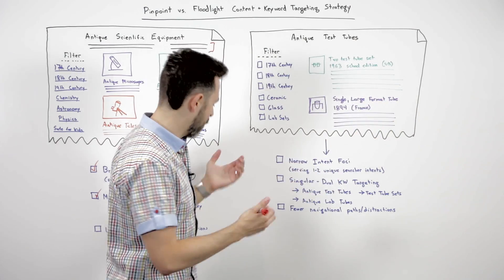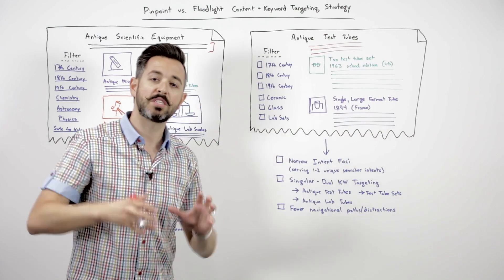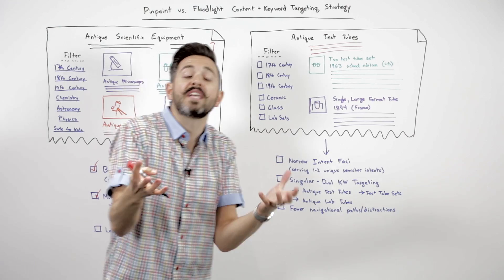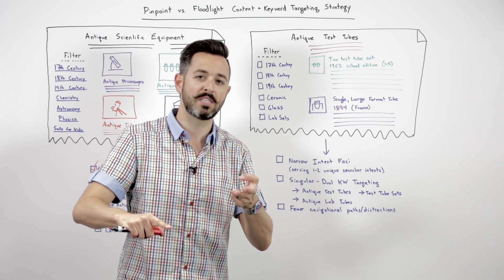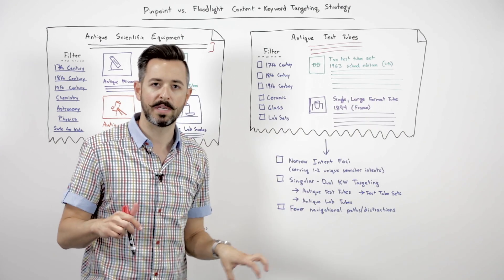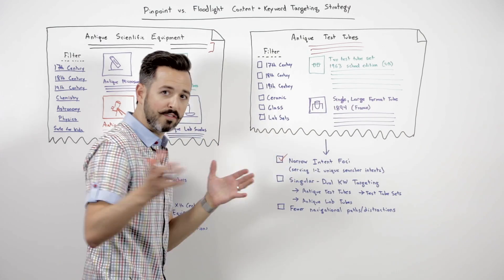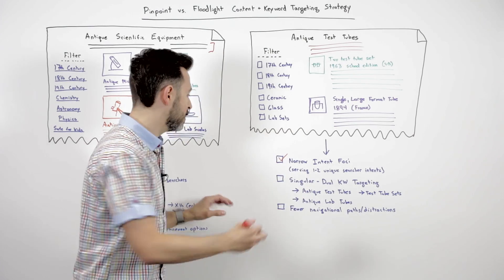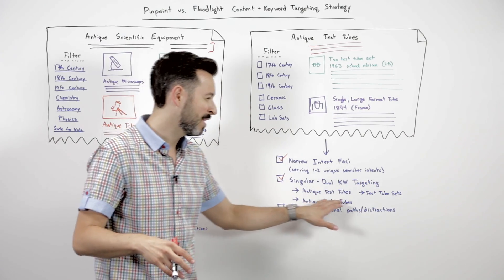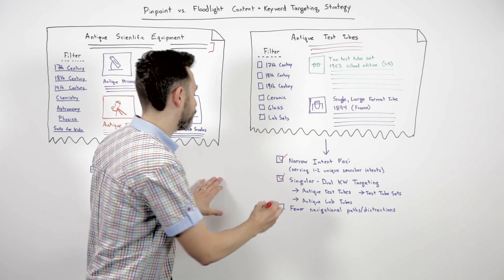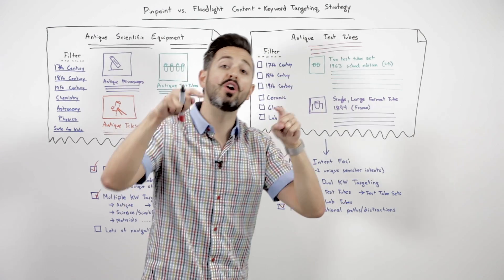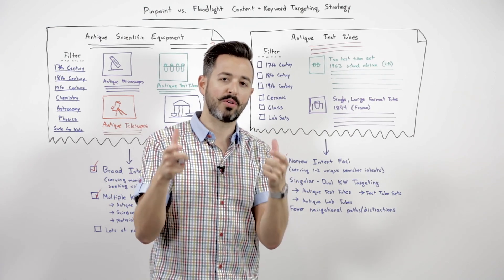You can also see I've got my individual content here. I probably would go ahead and add some content specifically to this page that is just unique here and that describes antique test tubes and what kinds of things that your searchers need. They might want to know things about price, make and model, what they were used for. Great. You can have that information broadly and then individual pieces of content that someone might dig into. This is narrower intent foci, obviously, serving maybe one or two searcher intents. This is really talking about targeting maybe one to two separate keywords. So antique test tubes, maybe lab tubes or test tube sets, but not much beyond that. And then we're going to have fewer navigational paths, fewer distractions. We want to keep the searcher, because we know their intent, we want to guide them along the path that we know they probably want to take and that we want them to take.